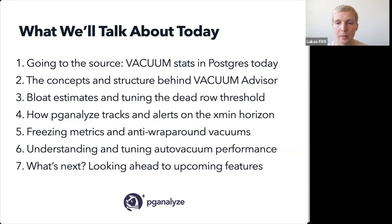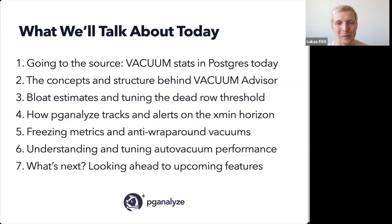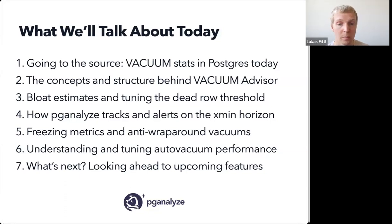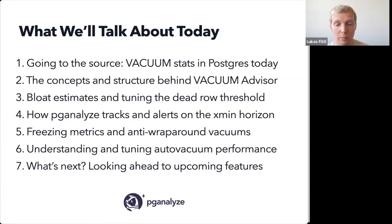The X-Men horizon has been a very confusing concept, and I feel like the way we've now described it in PGLIS and help you alert on this problem — which can block your vacuums — really hits the nail on the head. Fifth, we'll talk about freezing metrics and anti-wraparound vacuums and how Vacuum Advisor shows you these, and how you can take action to prevent transaction wraparound. Sixth, we'll discuss understanding and tuning AutoVacuum performance, for example by tuning the worker count. And last, we'll give a preview of additional features we're looking at.